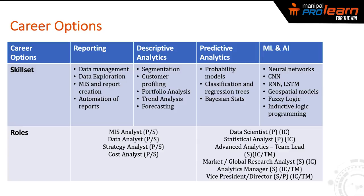Different individuals have different levels in the data science vertical, progressing from reporting and descriptive analytics towards prescriptive analytics, ML, and AI. The skills required for reporting include data manipulation, data management, data exploration, management information systems, and the ability to create and automate reports. In the descriptive analytics space, skills include segmentation, customer profiling, portfolio analysis, trend analysis, and forecasting.